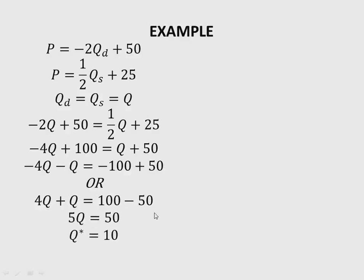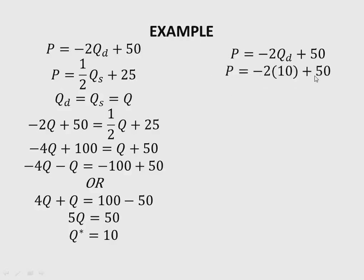To find the price, we substitute Q = 10 into the demand function: P = -2(10) + 50 = -20 + 50, which gives P = 30. So the equilibrium price is 30 and the equilibrium quantity is 10.